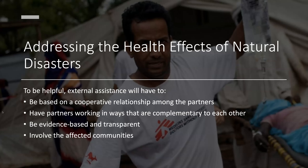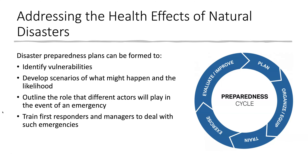External assistance requires cooperative relationships among partners — both individuals on the ground in-country and external partners coming in — working in ways that are complementary to each other, evidence-based and transparent, and involving the affected communities. Disaster preparedness plans are important and can be formed by identifying vulnerabilities, developing scenarios of what might happen, outlining the roles of different actors in an emergency, and training first responders and managers.